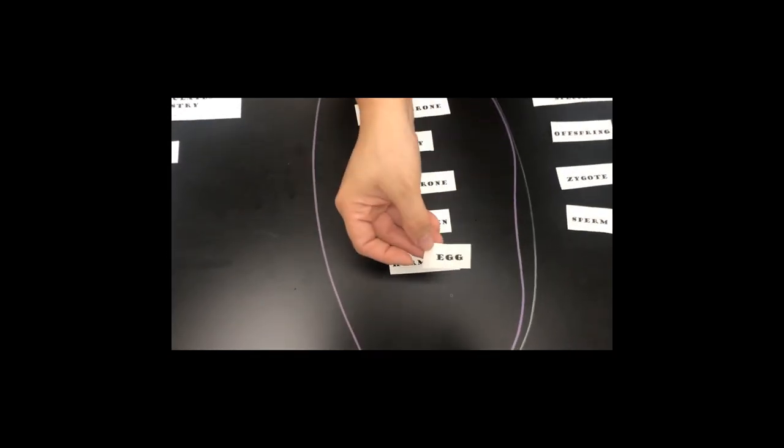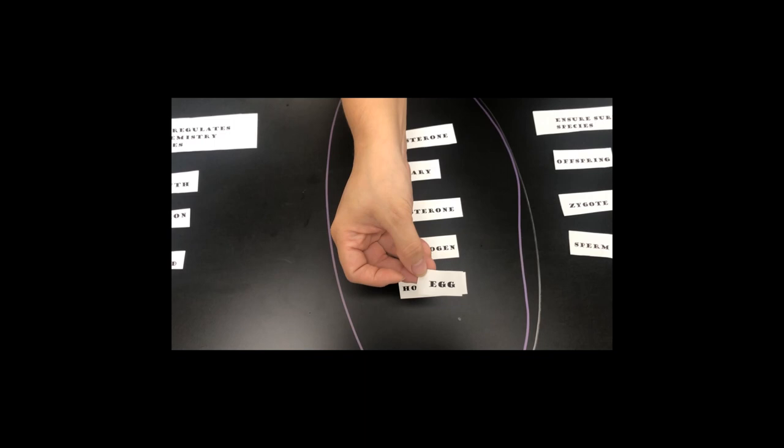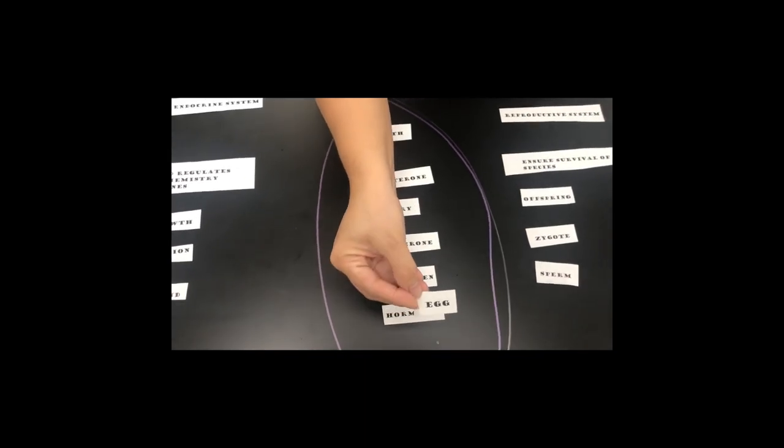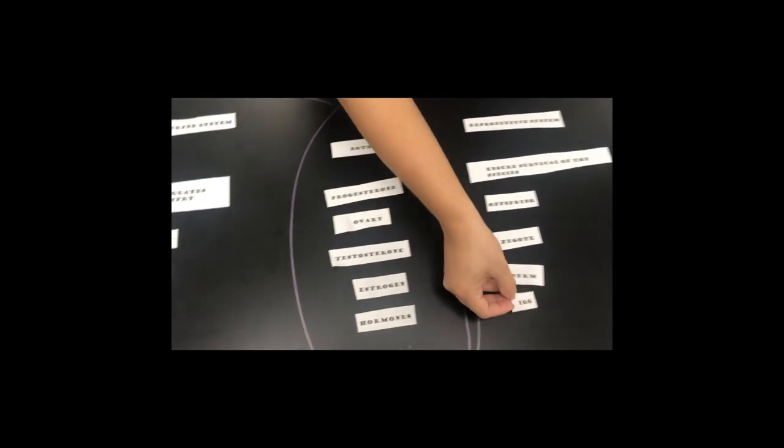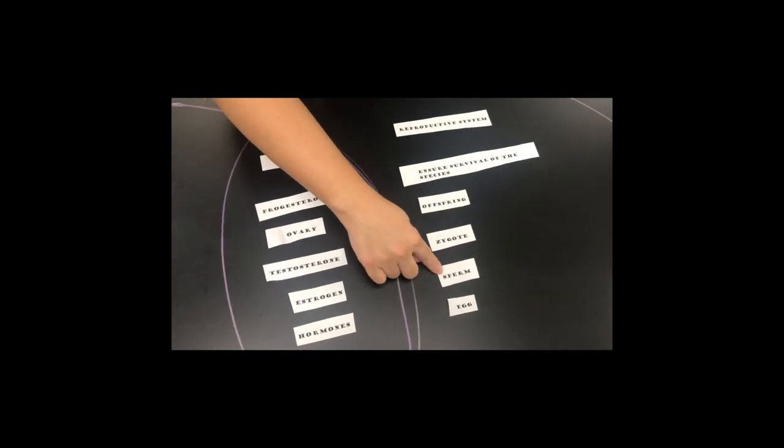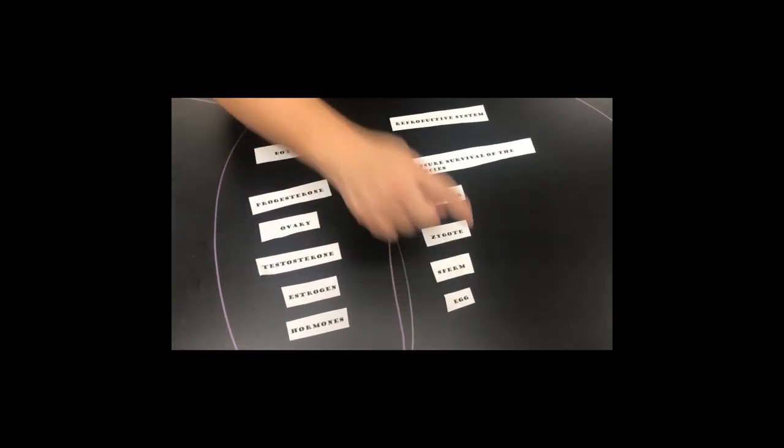Eggs are found in the ovaries of a female. This is the female gamete or female sex cell. So this is the male sex cell and this is the female sex cell.